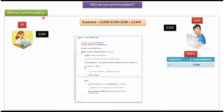So without synchronization, what problem will we face? Here I have defined the class BankAccount and it has a deposit method. Using this deposit method we can deposit money to the bank. This deposit method accepts the amount which the user wants to deposit. Inside the deposit method, I am getting the current account balance by passing the account number, and then adding the account balance to the amount the user wants to deposit to get the new account balance.